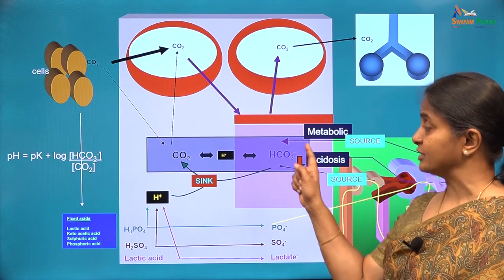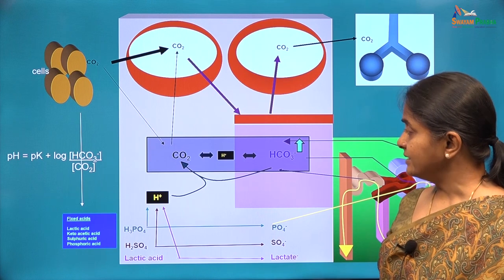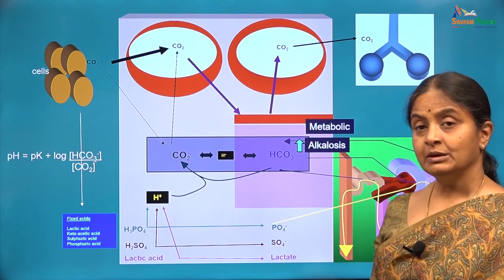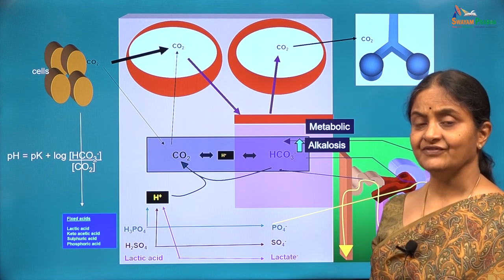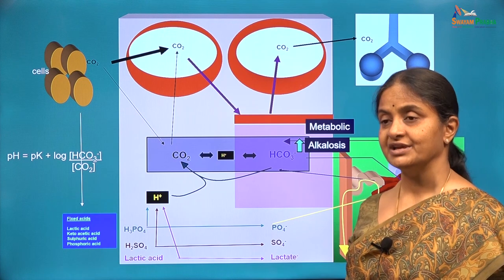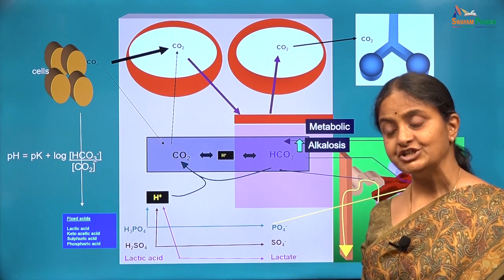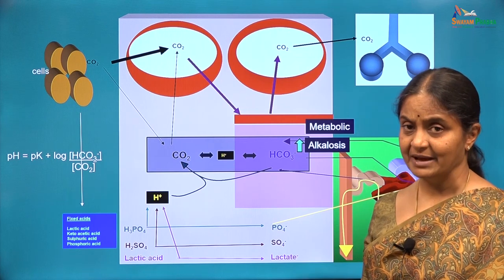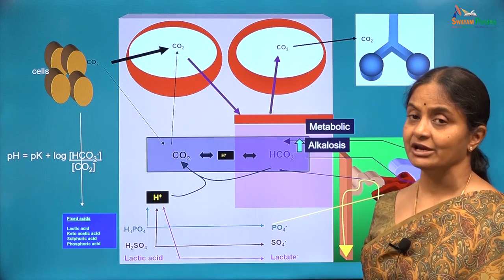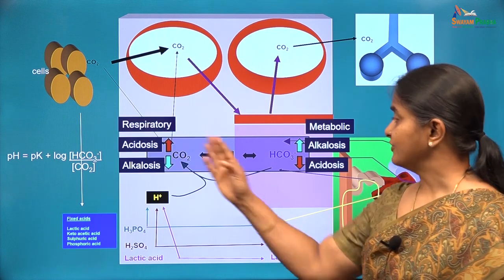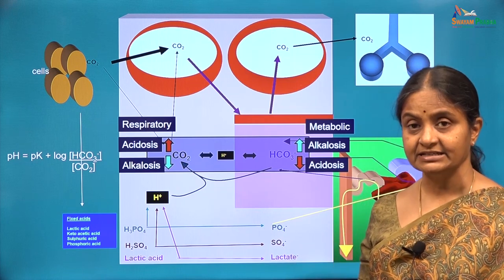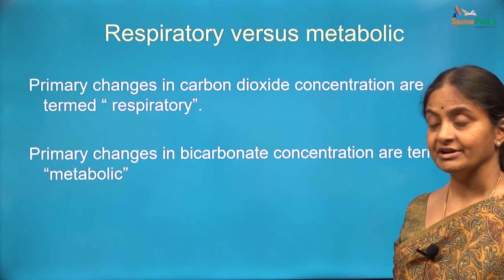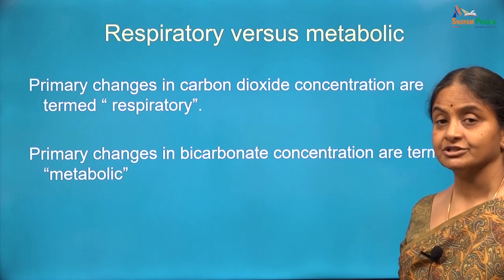So the term metabolic refers to a change in bicarbonate concentration. Similarly, an increase in plasma bicarbonate — whether from renal or gastrointestinal causes — is classified under the term metabolic alkalosis. It is important to realize that whether there is any metabolic cause or not, any change in bicarbonate in plasma is classified under metabolic. A decrease in bicarbonate is metabolic acidosis and an increase in bicarbonate is metabolic alkalosis. These are the four conditions we will discuss in detail in subsequent lectures. The message is: primary changes in carbon dioxide concentration are called respiratory, and primary changes in bicarbonate concentration are termed metabolic.